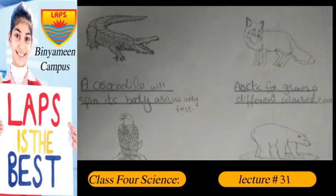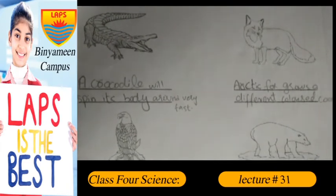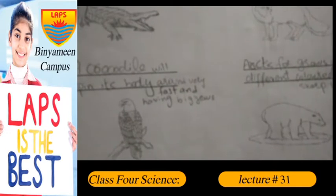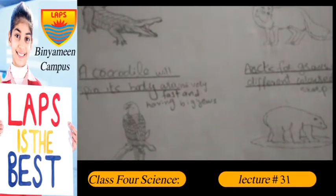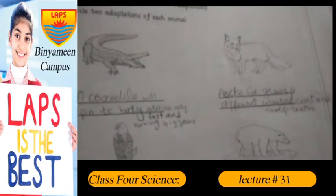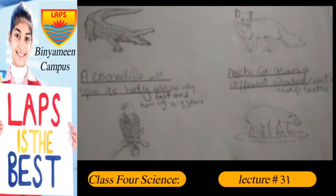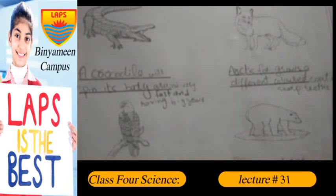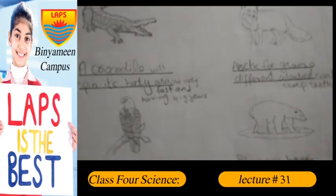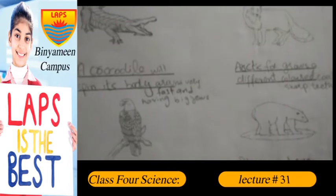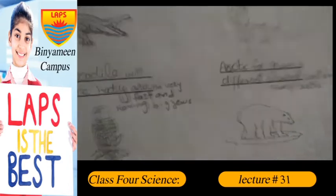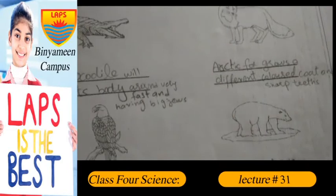A crocodile will spin its body around very fast. Arctic foxes grow a different color.